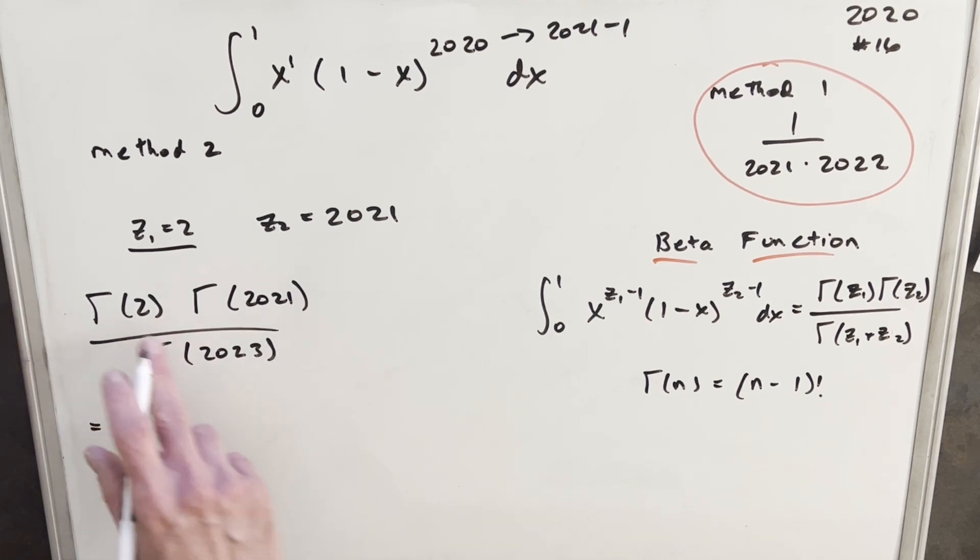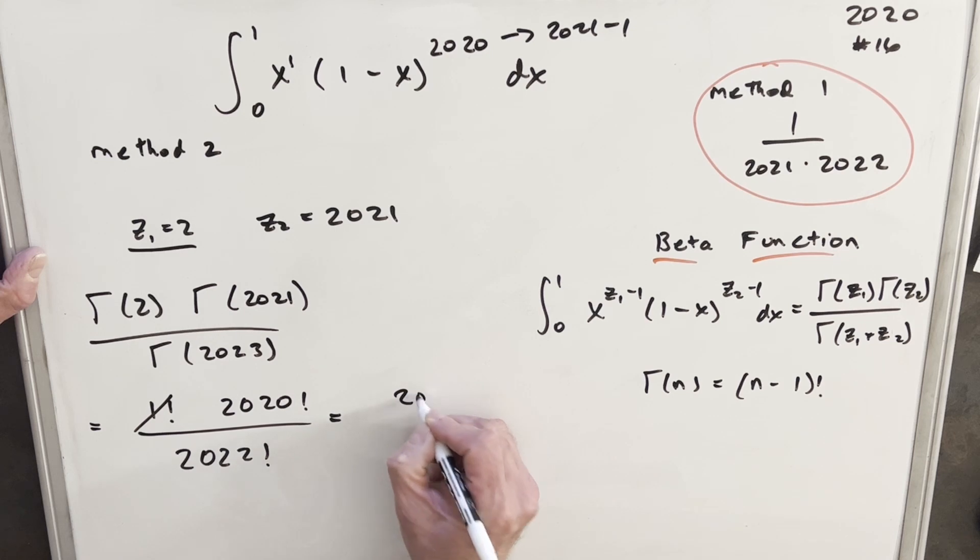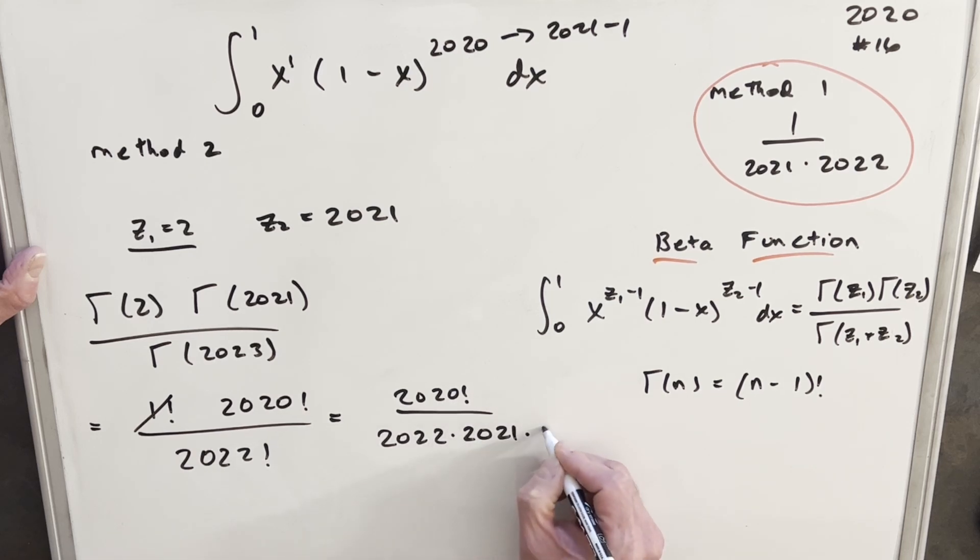So then for each of these, so like for gamma of two, it's going to be n minus one. So it's the same thing as one factorial here. And then for 2021, plugging that in here, we're going to be looking for 2020 factorial. And then 2023 is just going to be 2022 factorial. Well, one factorial is just one. We're not worried about that. Let's just bring over our 2020 factorial, but I'm going to rewrite my 2022 factorial as 2022 times 2021 times 2020 factorial.